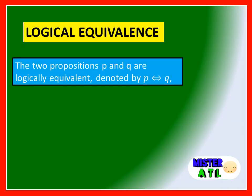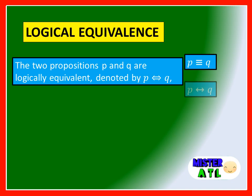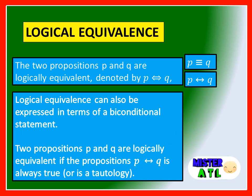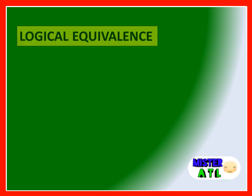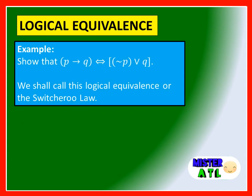Logical equivalence: Two propositions P and Q are logically equivalent, denoted by the equivalence symbol. Logical equivalence can also be expressed in terms of a biconditional statement — two propositions P and Q are logically equivalent when 'P if and only if Q' is always true, or is a tautology. Example: Show that P then Q is logically equivalent to not P or Q. We shall call this the switcheroo law.